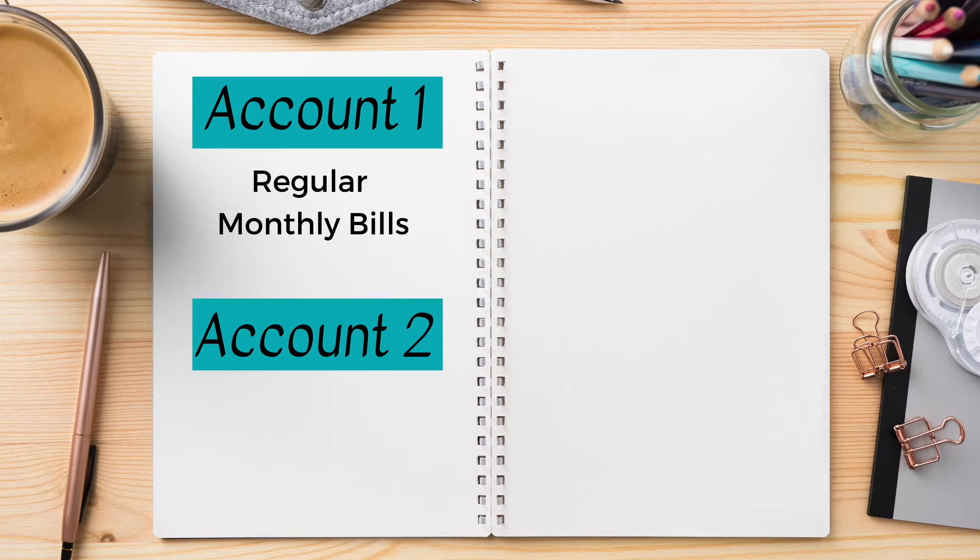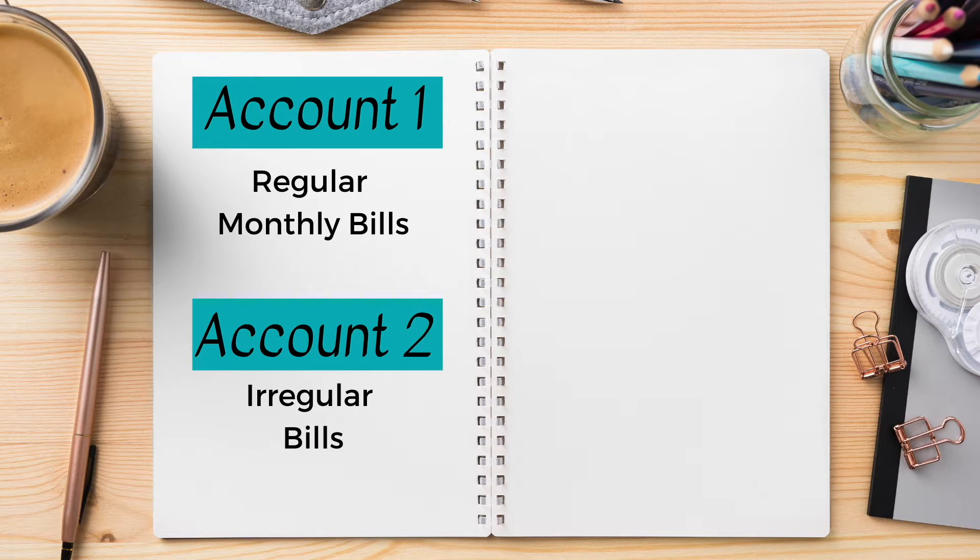The second account will be for all your bills that are not paid monthly, or things that need to be budgeted for but you may not always need on a regular basis. For example, car insurance that you pay twice a year, car repairs, oil changes, medical visits — either things you pay irregularly or things you'll most likely need but aren't consistent.